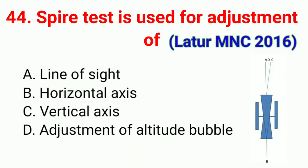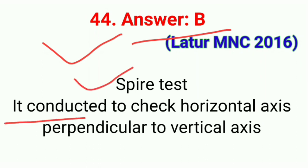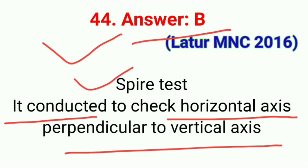Question number forty-four: Spire test is used for the adjustment of. The correct answer is option B, horizontal axis. This question was asked in Latur MNC 2016. The spire test is conducted to check whether the horizontal axis is perpendicular to the vertical axis.